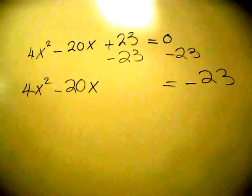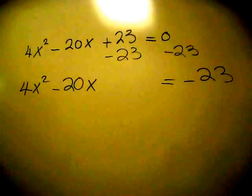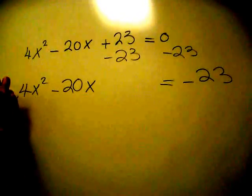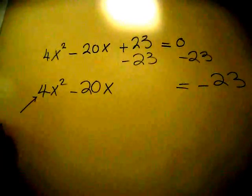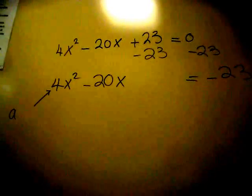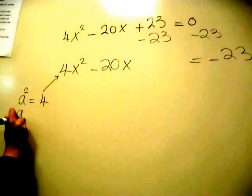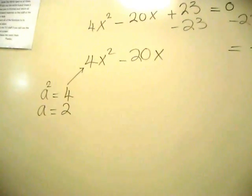Normally you would factor 4 out, but this is a faster way. You want to figure out what a is. We know that the first number in the perfect square is always squared. So we know that a² is 4, that means that a is actually 2.